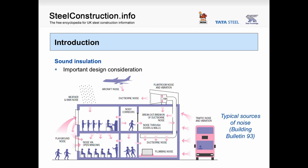Sound insulation can refer to preventing sound from moving from one part of a building to another, such as adjacent classrooms in a school building, or it could refer to preventing noise from entering the building from external sources such as traffic and aircraft. The diagram on the slide shows many sources of noise that can affect a building and how these sources of noise may move around the building affecting the occupants.